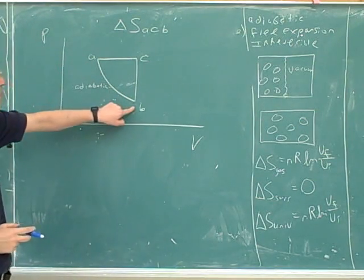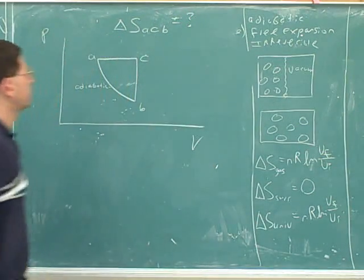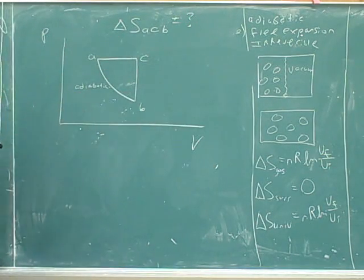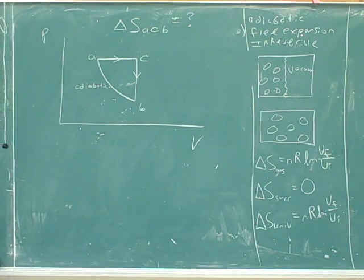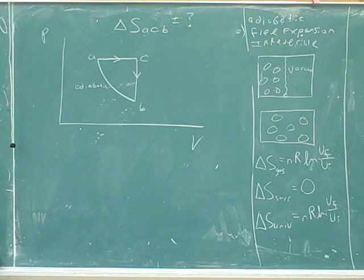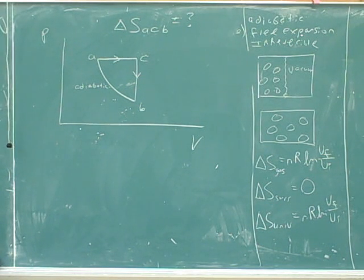So let's say that the process from A to B is adiabatic. And the question is, what's delta S for the process from A to C and from C to B? So let's see if we can work that out. Okay. Well, we know it's equal to the delta S from A to B. Yeah. So the delta S for adiabatic is zero. Right.